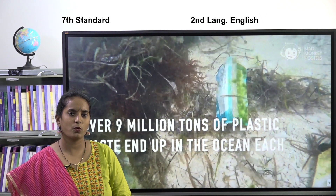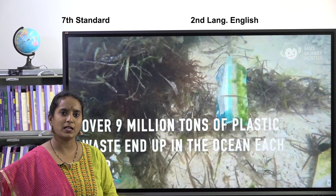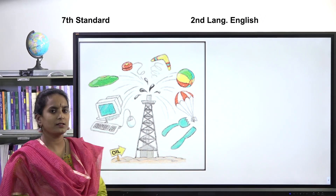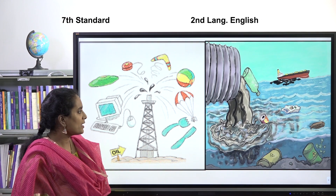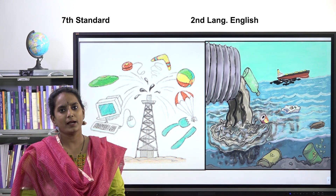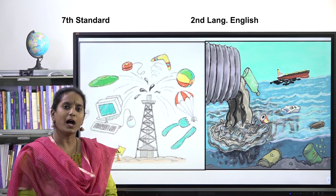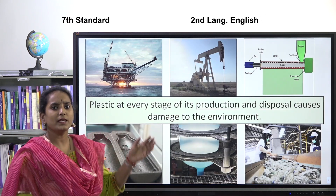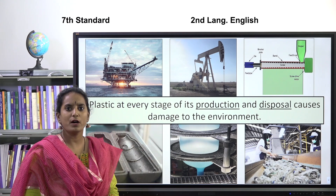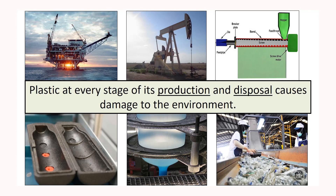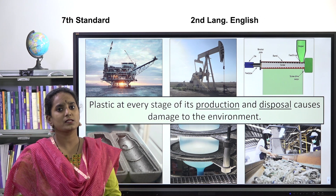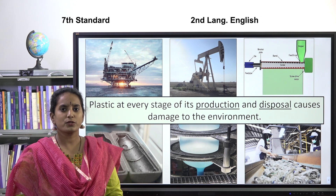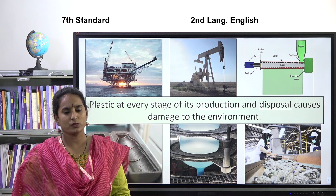Children, you saw in the video what has happened. We can see plastic everywhere — it has reached even the seas and oceans. We are using plastic in every possible shape and form, and it has caused a lot of problems to our environment. Let us understand in detail how it has caused problems. These are the different stages of production of plastic. While producing the oil required for plastic, there is leakage of oil in the sea, and in the factories that manufacture plastic, there is a lot of smoke let out, causing problems to the environment.